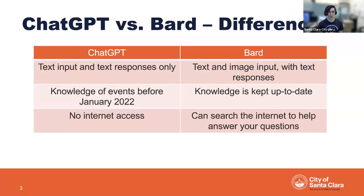These two services are pretty similar — they're both conversational AI — but they do have some differences. ChatGPT, for example, will only do text input and text responses, whereas BARD allows text and also image input, so you can show it a picture and ask it questions about it. Another difference is that ChatGPT is trained on information from January 2022 and earlier, which means if you ask about a current event — say, who won a sports game last week — it wouldn't be able to tell you.